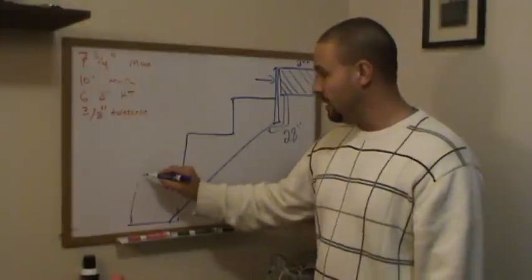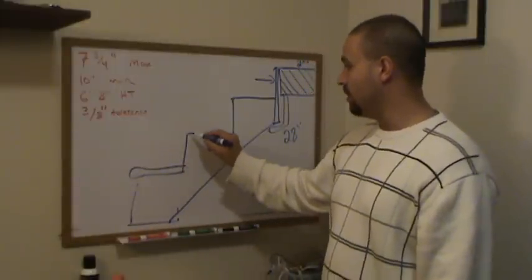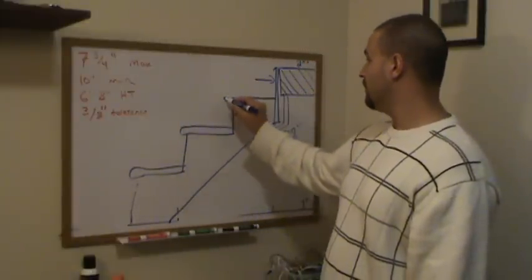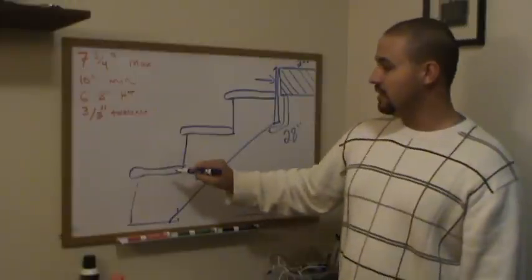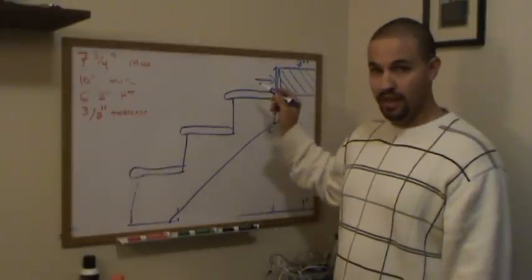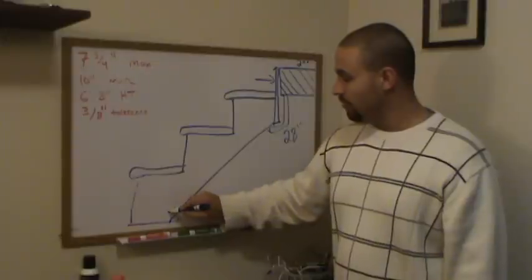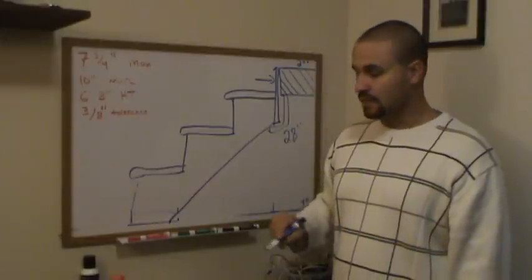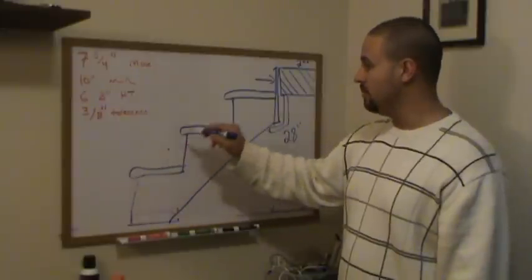Also, one more thing to remember is the finishes on the top of your steps. Whatever the distance of this finish is, and they will all be the same, you can remove from the bottom of your stringer. And that will keep the same distance between each step.